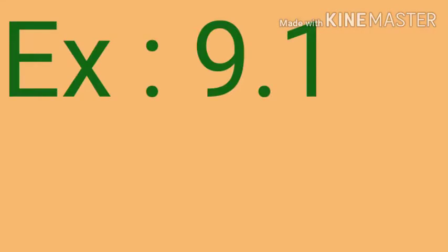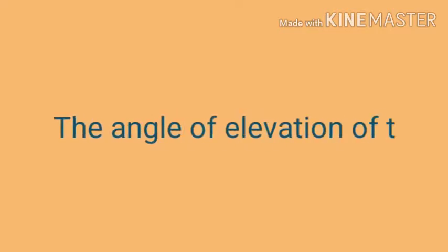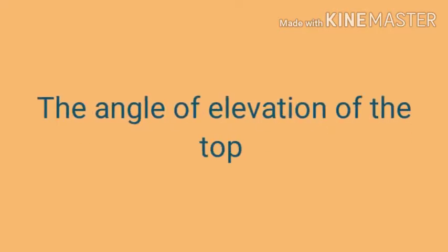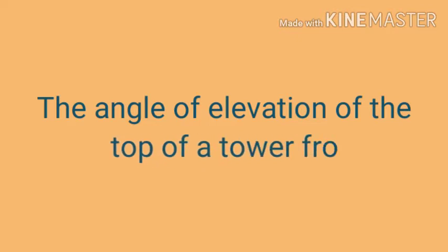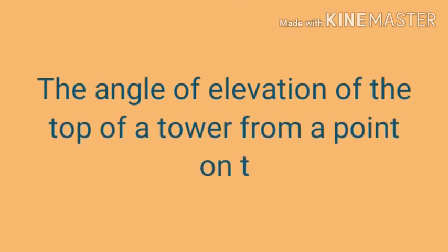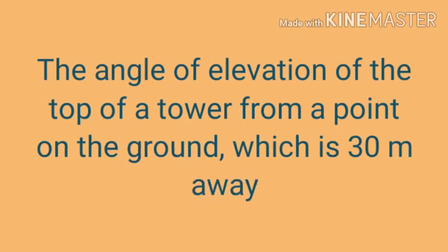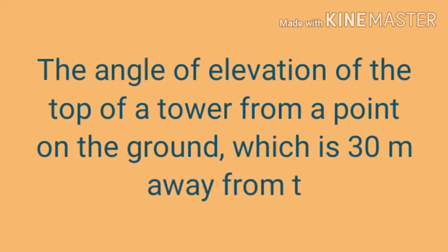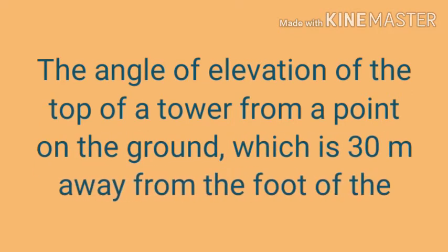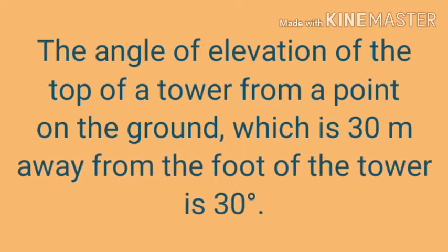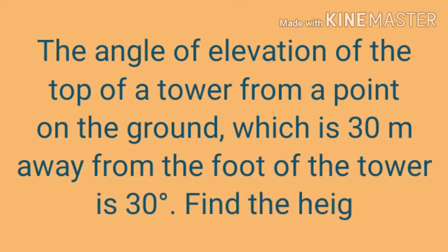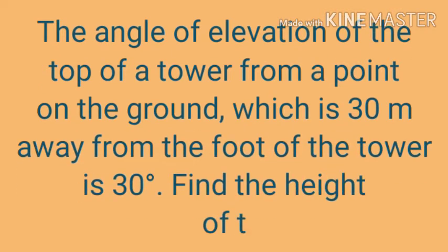Exercise 9.1, Question number 4. The angle of elevation of the top of a tower from a point on the ground which is 30 meter away from the foot of the tower is 30 degree. Find the height of the tower.